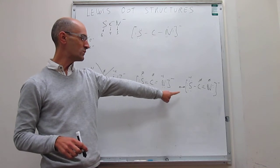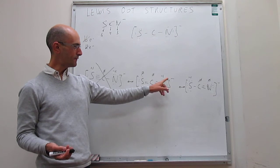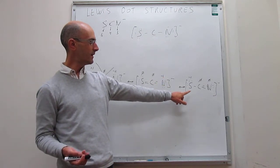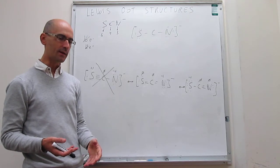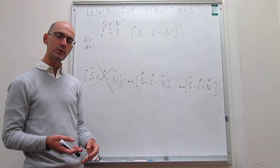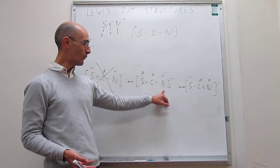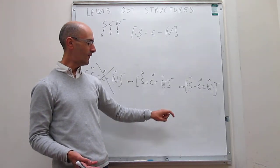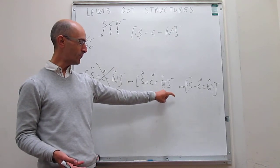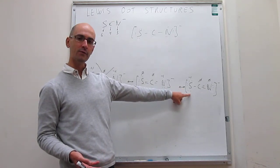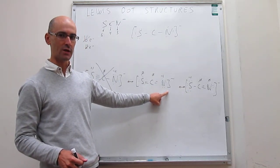Now the question is which one of the remaining two structures is better. In one case you have a negative formal charge on nitrogen, and in the other you have a negative formal charge on sulfur. We can sort this out using electronegativity. We know that nitrogen is more electronegative than sulfur — the Pauling electronegativity values are 3.0 for nitrogen and 2.5 for sulfur — so it would seem that the structure with the negative formal charge on nitrogen is actually the more reasonable Lewis dot structure.